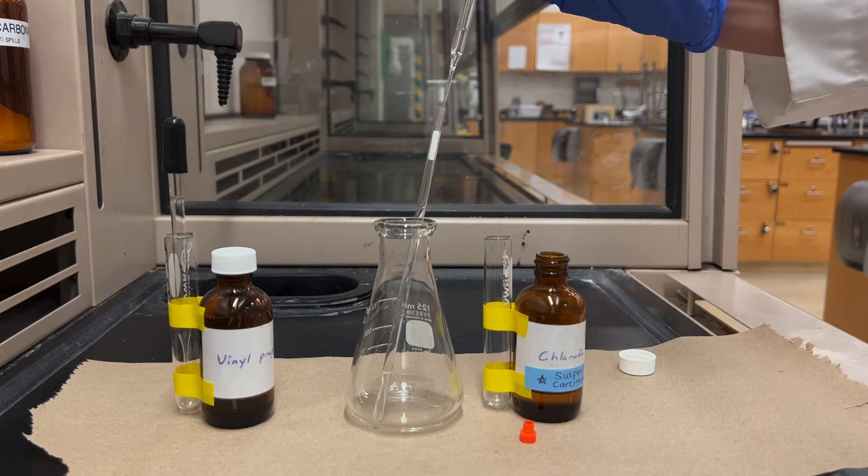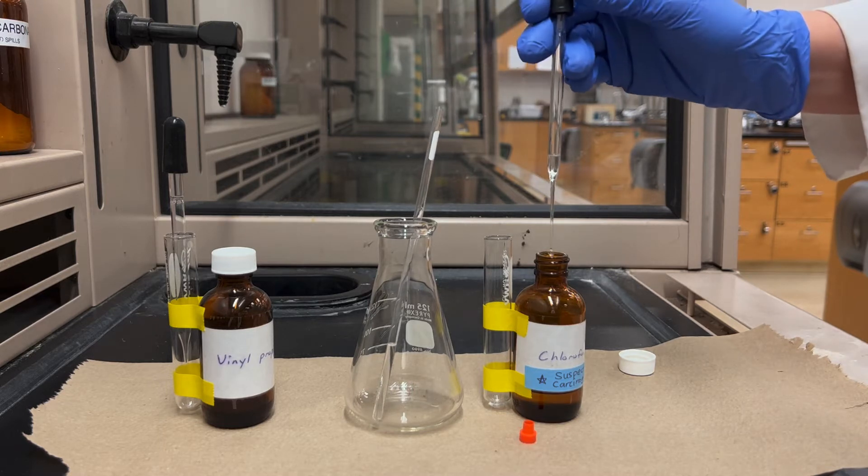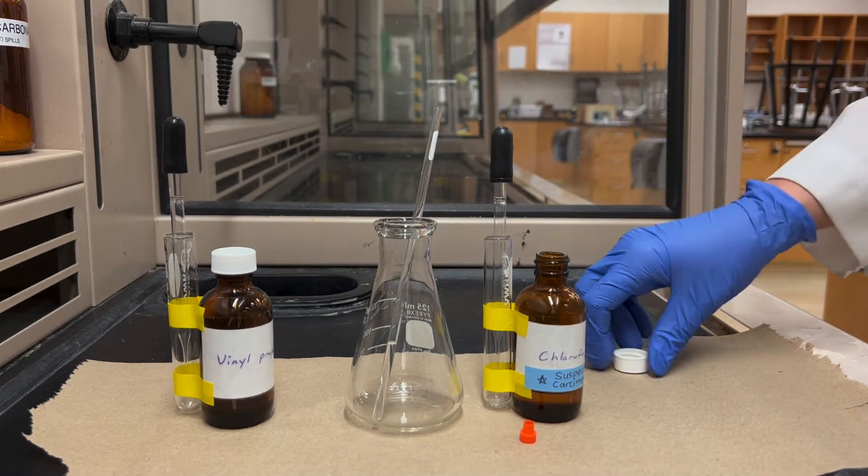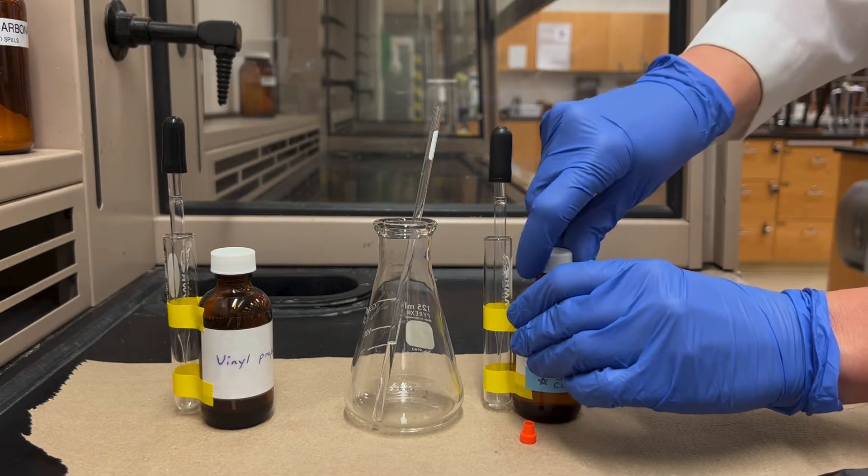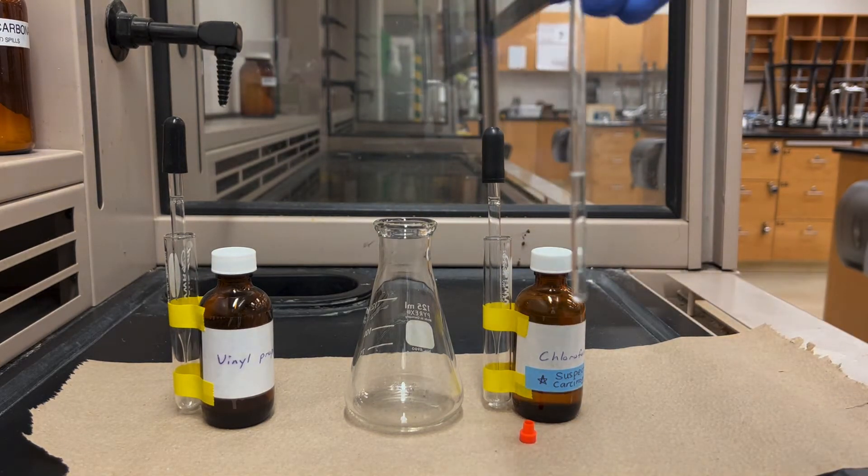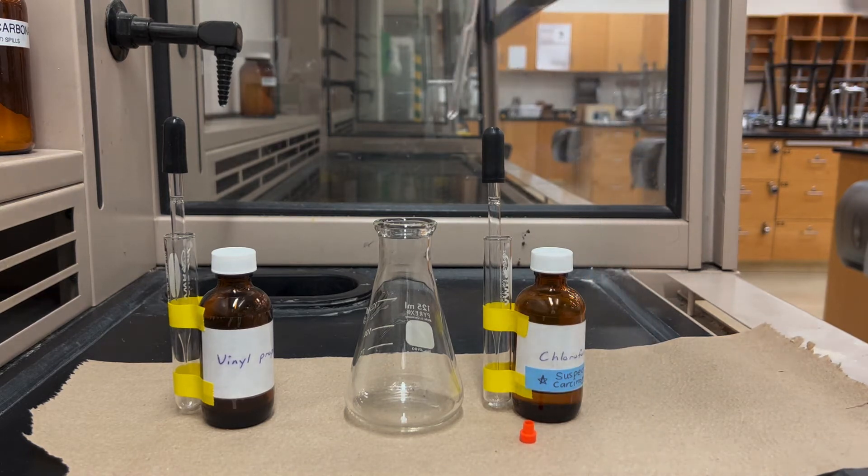Then you can add that to your NMR tube and you want to fill it up to about one and a half inches high. If you have extra you can actually put that back into the reagent jar, especially if you know that that pipette is clean you won't necessarily cross contaminate it, and deuterochloroform is actually quite expensive so we don't want to waste it.